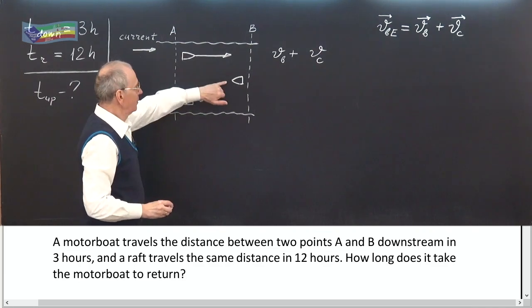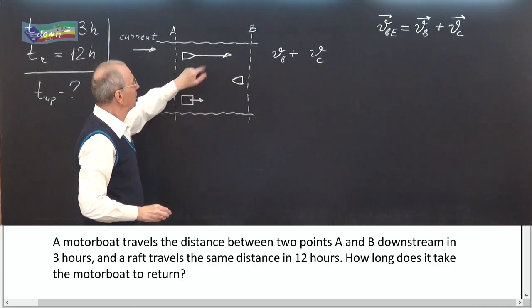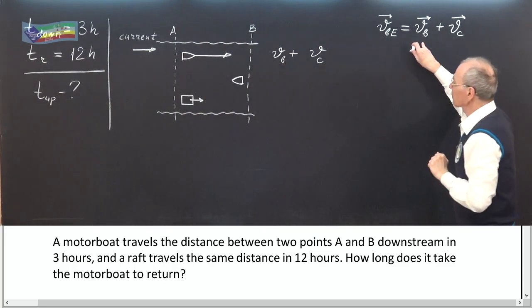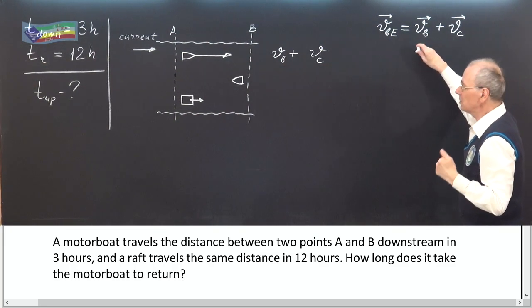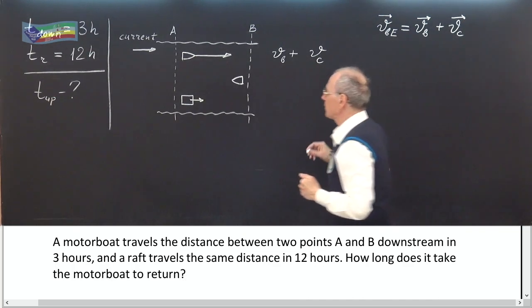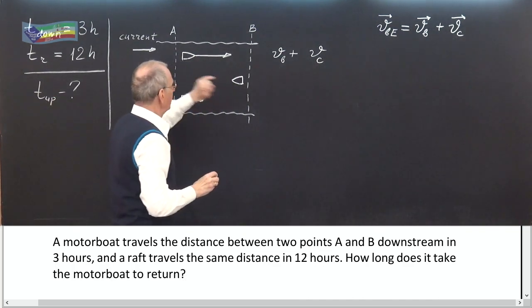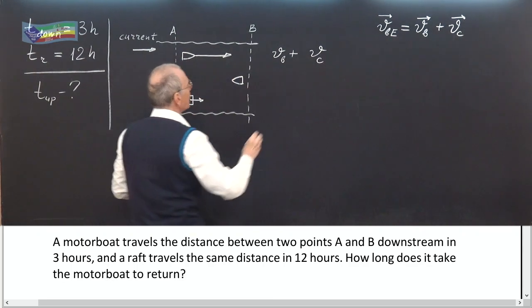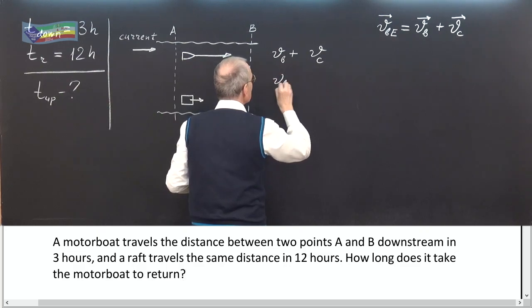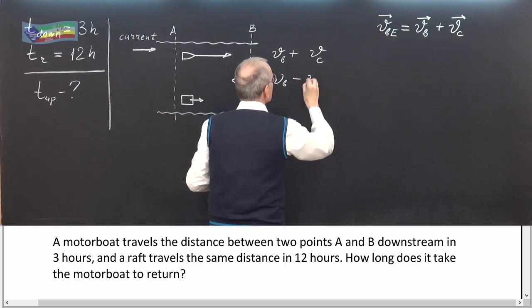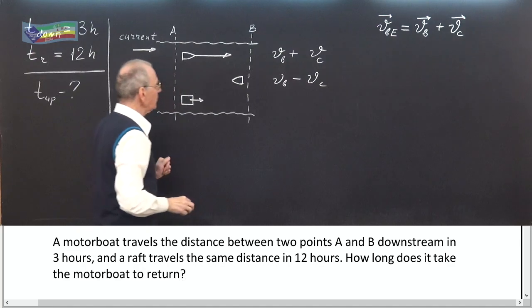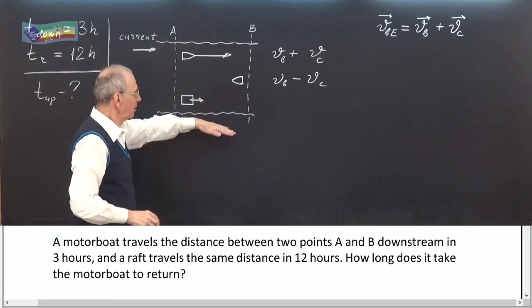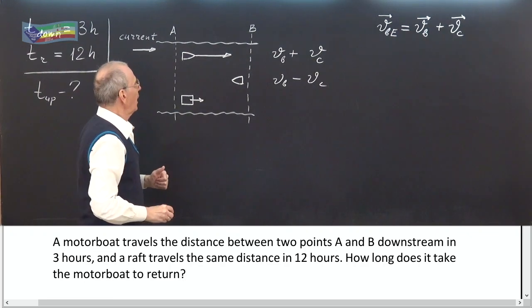When the boat returns from B to A, the velocity of the boat is in the opposite direction to the current. So the speed of the boat on the return equals V-boat minus V-current, relative to the bank of the river.